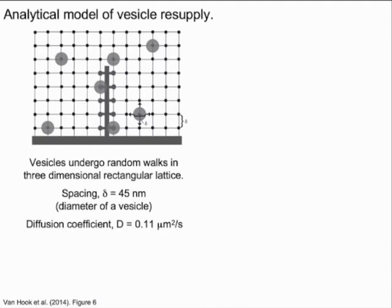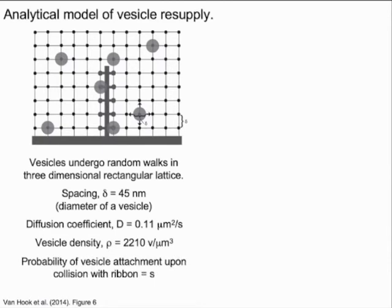Based on ultrastructural measurements, the vesicle density in the terminal is 2,210 vesicles per cubic micron. S is the probability that a vesicle will attach to the ribbon upon collision. The probability of any one lattice site becoming occupied in a time step is equal to the vesicle density per lattice site.